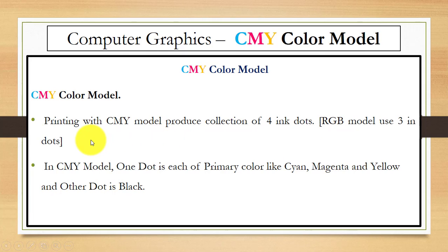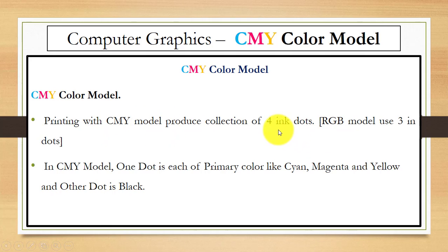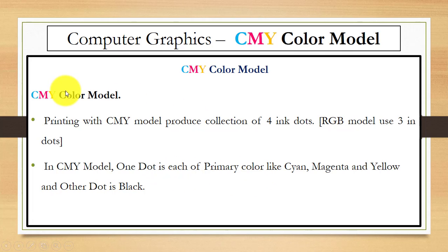Printing with the CMY model produces a collection of four ink dots, so we use four ink dots for printing. When you use the CMY color model, we use four ink dots. In contrast, the RGB color model uses only three ink dots, corresponding to the three primary colors red, green, and blue.